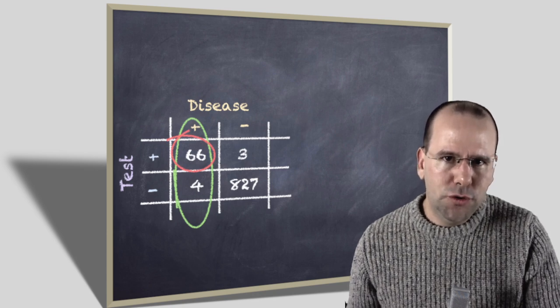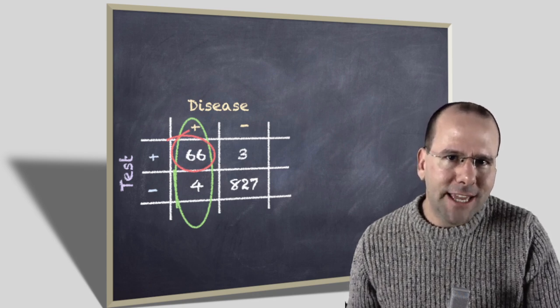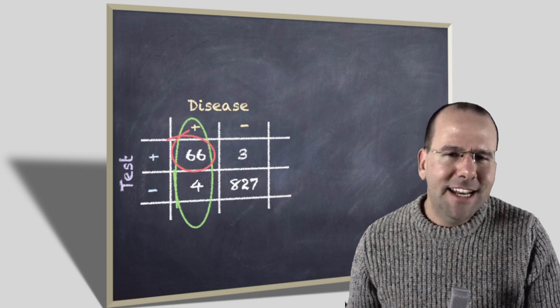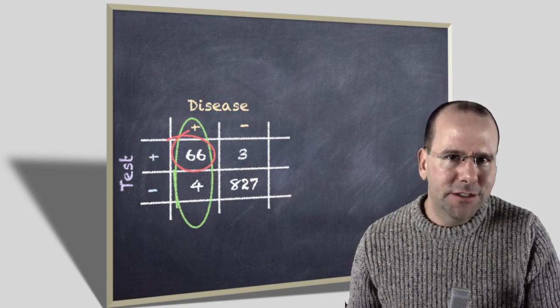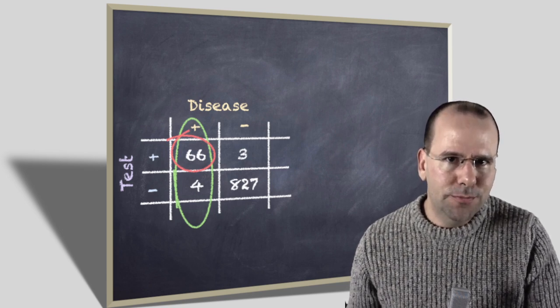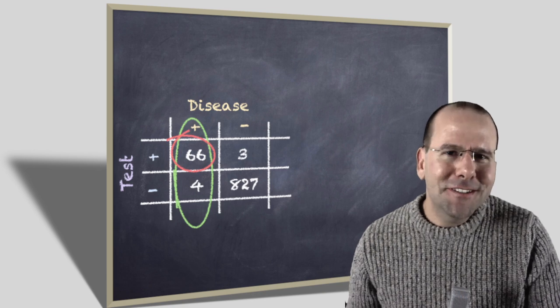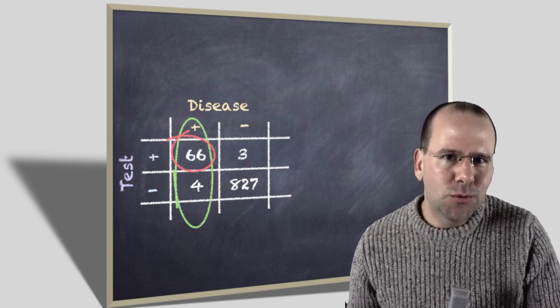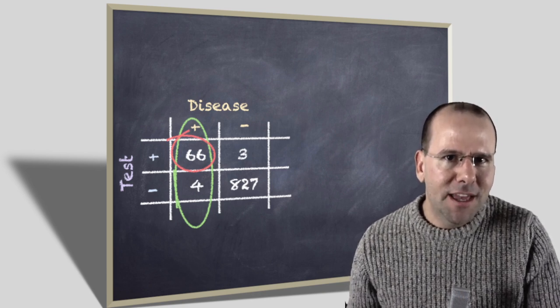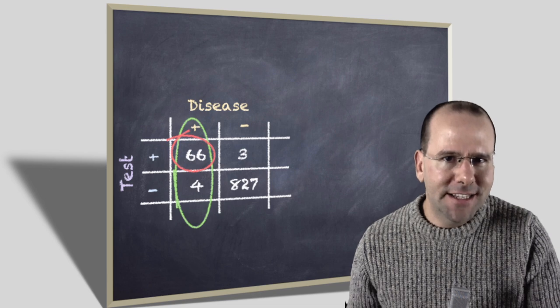The difference between those two groups is a function of the characteristics of the test itself. And it's not affected at all by the prevalence of the disease because everybody in that group has the disease. In other words, it doesn't matter if it's a common disease or not, because at that point in time, everybody that we're looking at actually has the disease.